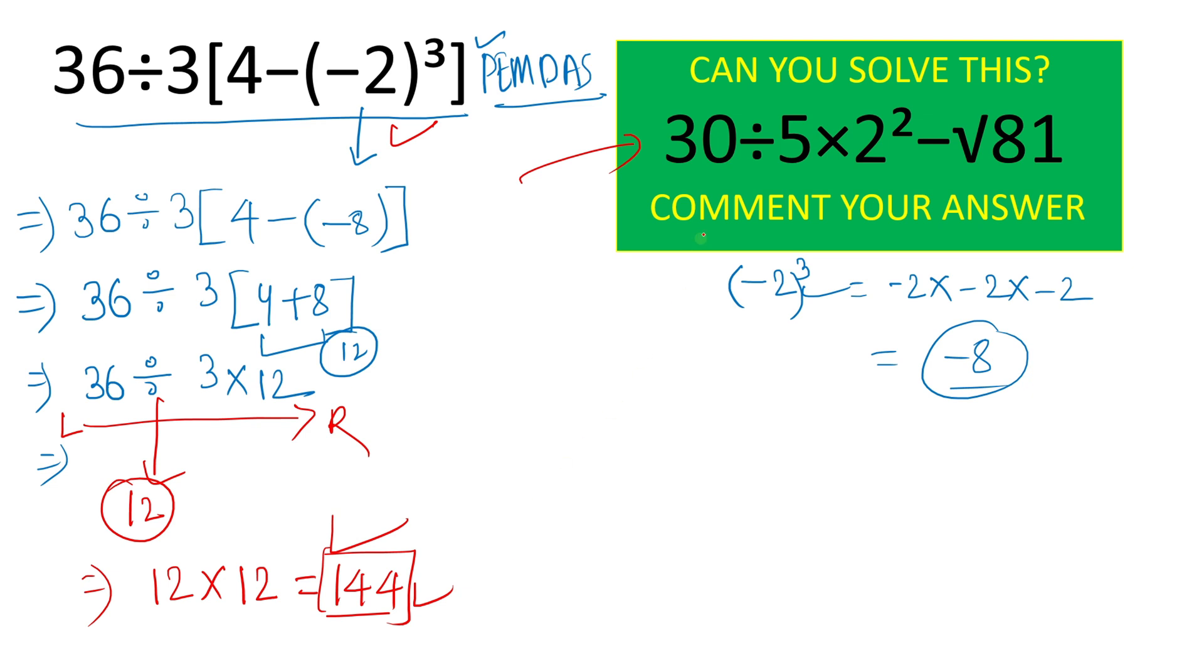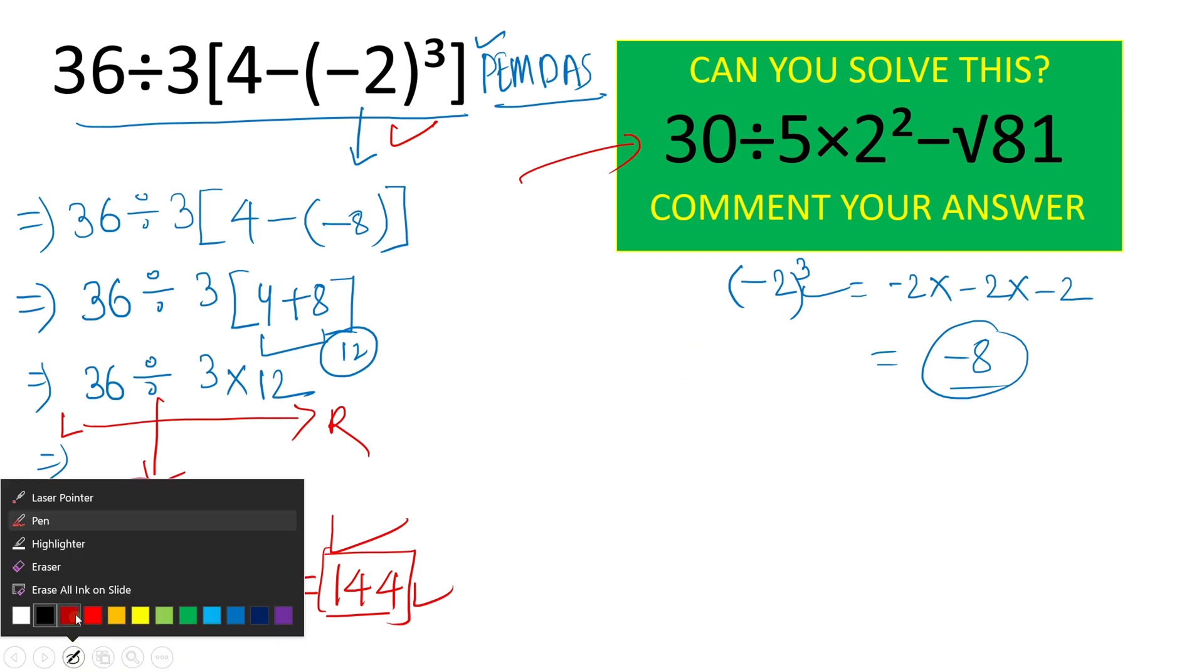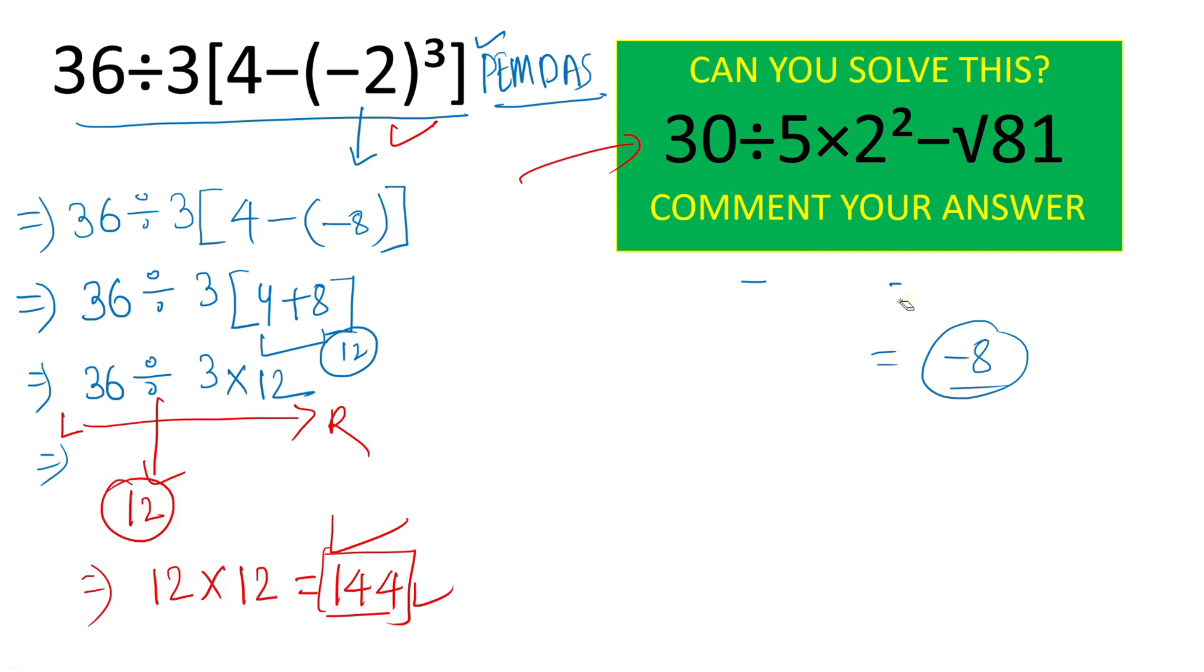And here is the bonus problem. We have 30 divided by 5 times 2 square minus root 81. So we will solve for different parts. And first we will erase this.